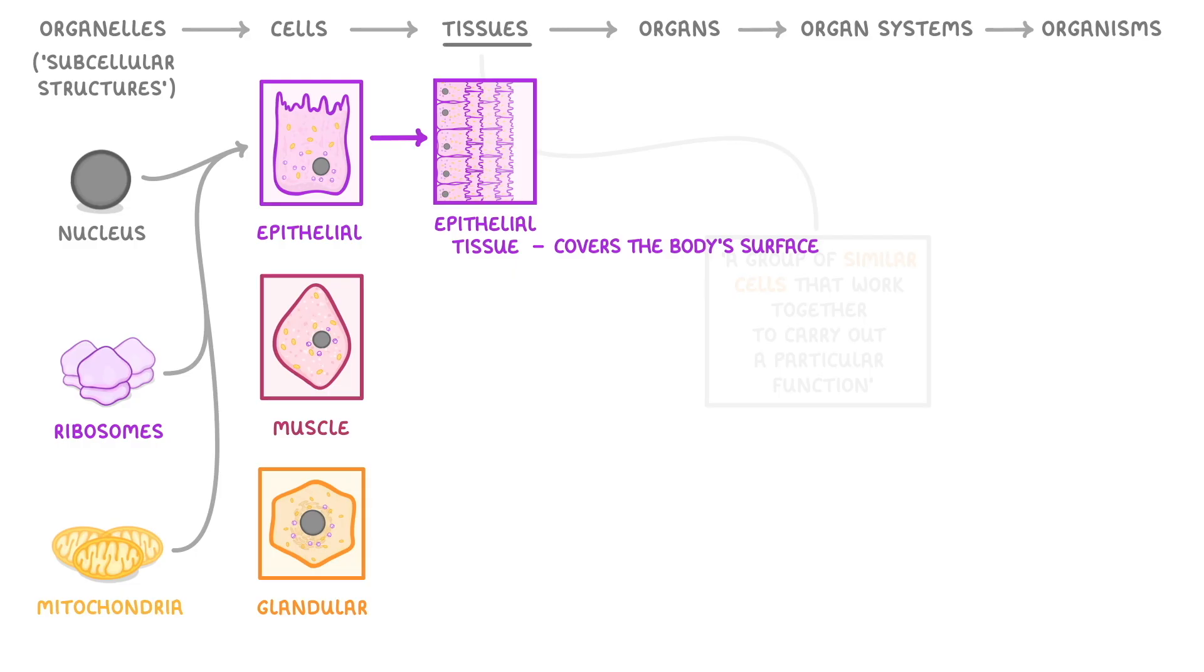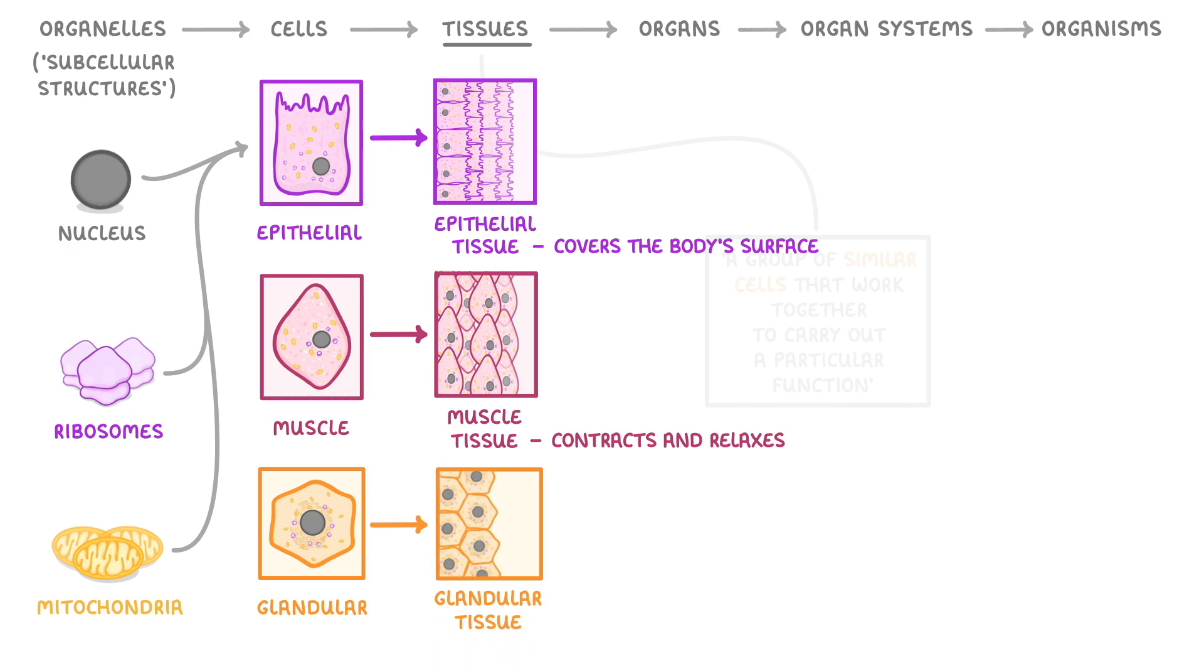Meanwhile, a lot of muscle cells will form muscle tissue, which has the function of contracting and relaxing to move different parts of our body. And lots of glandular cells will work together to form glandular tissue, which has the role of making and secreting chemicals like enzymes and hormones.